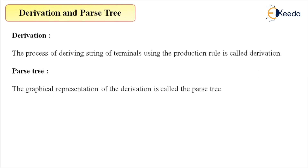The next section is derivation and parse tree. The definition: the process of deriving a string of terminals using the production rules is called derivation.